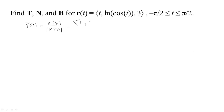r prime is going to be 1, and the derivative of cosine is negative sine, so we get minus sine t over cosine t — that would be minus tangent t — and then the derivative of the last component is 0.